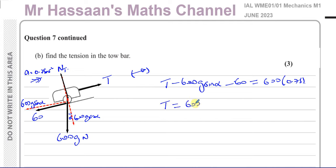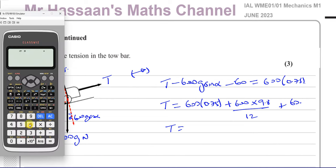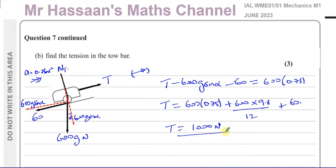So T = 600 × 0.75 + 600 × 9.8 ÷ 12 + 60. Calculating that gives T = 1000 newtons. That's the answer for part B, the tension in the tow bar.